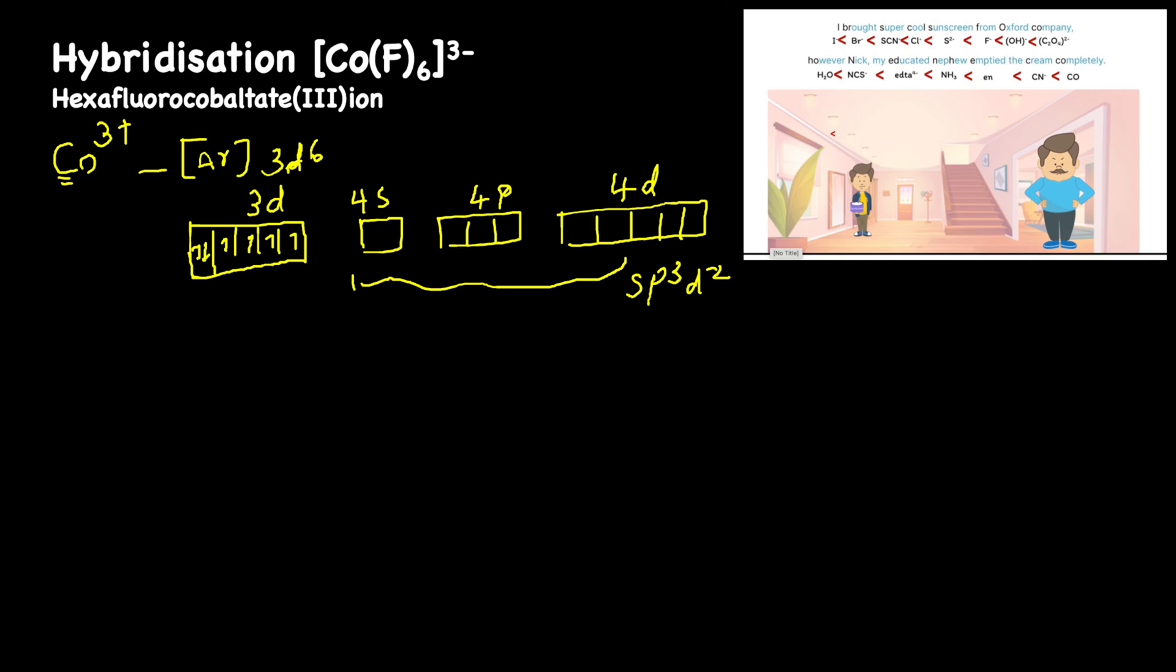So this complex is an outer orbital complex because the outer orbital 4d orbital is involved in this reaction. For this sp3d2 hybridization, the sp3d2 hybridized orbitals get a set of electrons from fluoride ion.